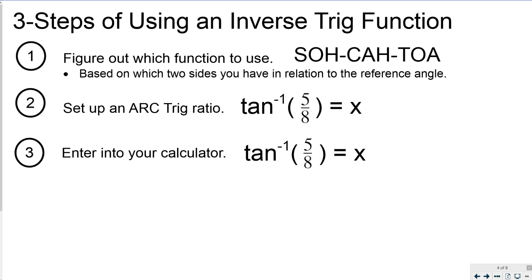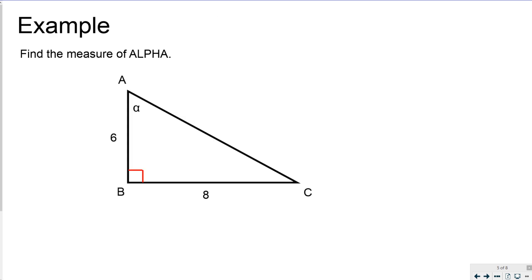The three steps of using an inverse trig function: first, figure out which trig ratio you need to use based on the two sides of the triangle you have. If you have all three sides you can pick whichever you prefer — personally I always prefer to use sine or cosine — but if you only have two sides you have to use those two sides in the correct corresponding ratio. Then set up the arc trig ratio; for example, with an opposite side of five and an adjacent side of eight, you'd take the inverse tangent, enter it into your calculator, and it gives you the angle measure.